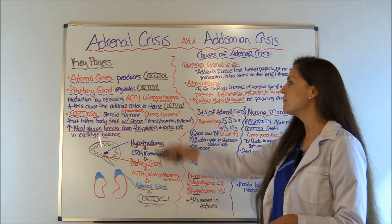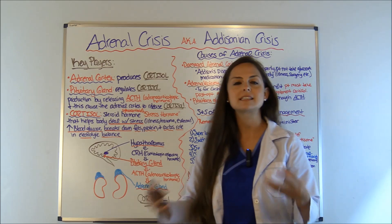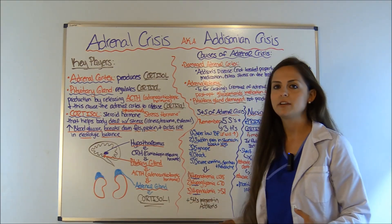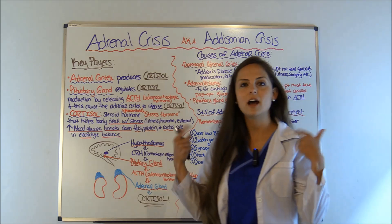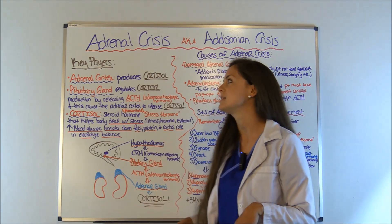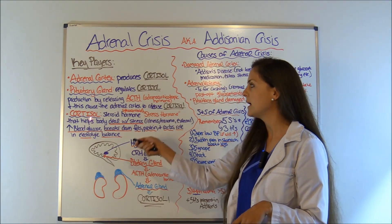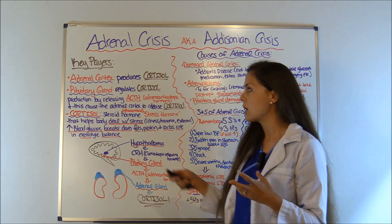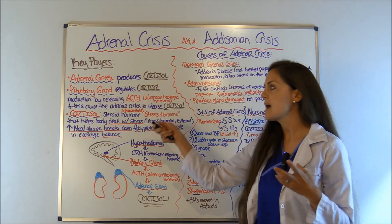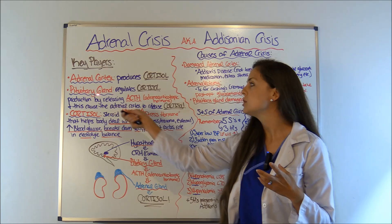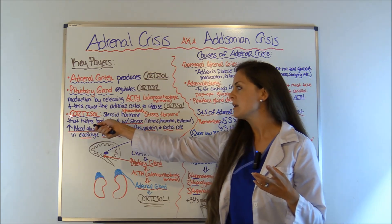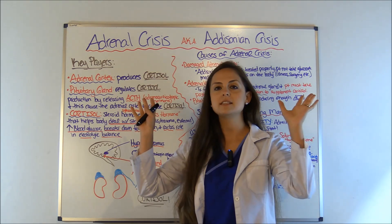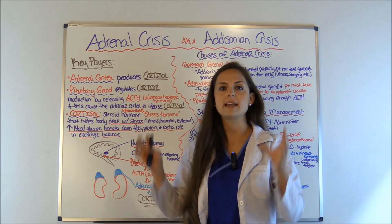Before we get into the causes, the signs and symptoms, and nursing management, let's look at the background information because it'll help us understand what's going on with this endocrine problem. The key players in adrenal crisis are the adrenal cortex, the pituitary gland, and cortisol. If you can remember those three things, all of this other stuff will make sense.